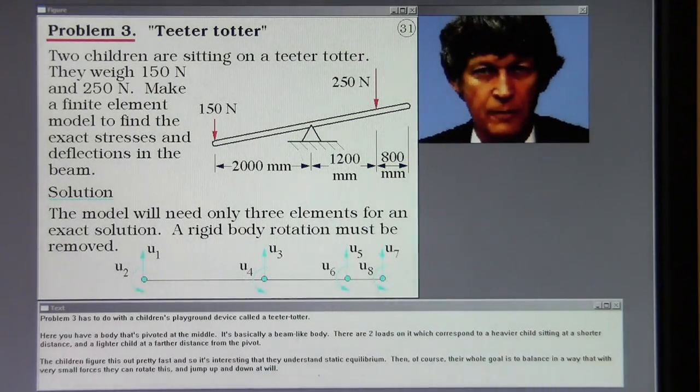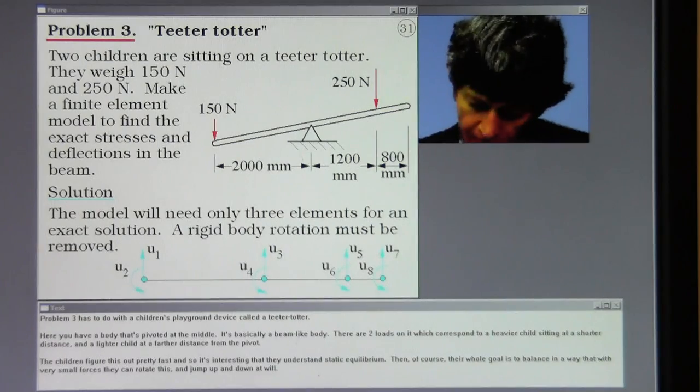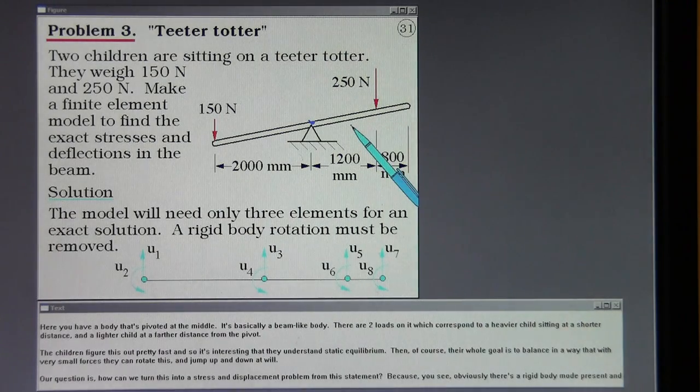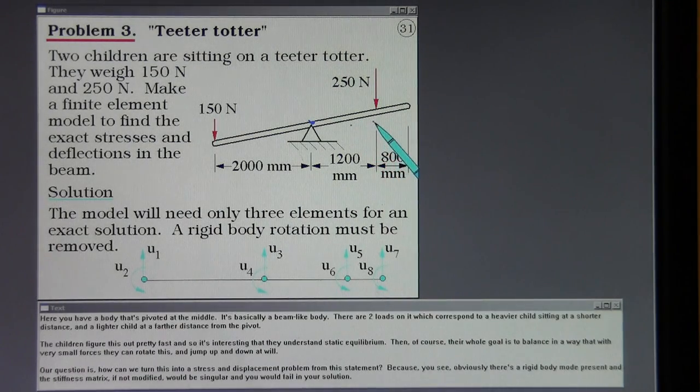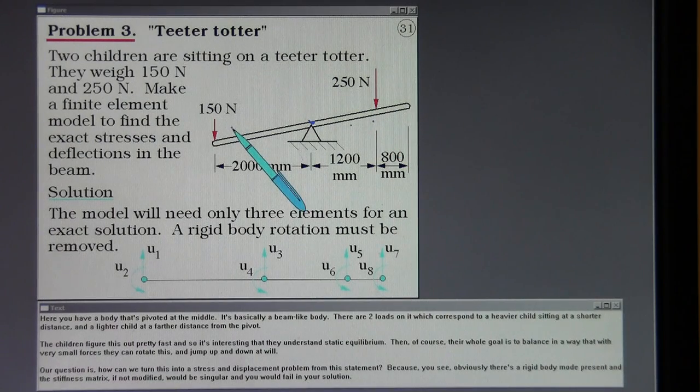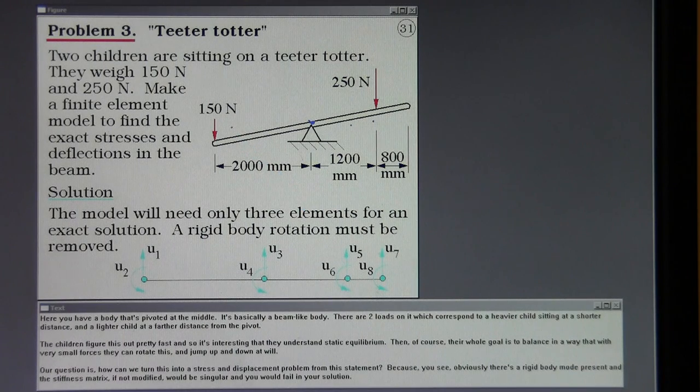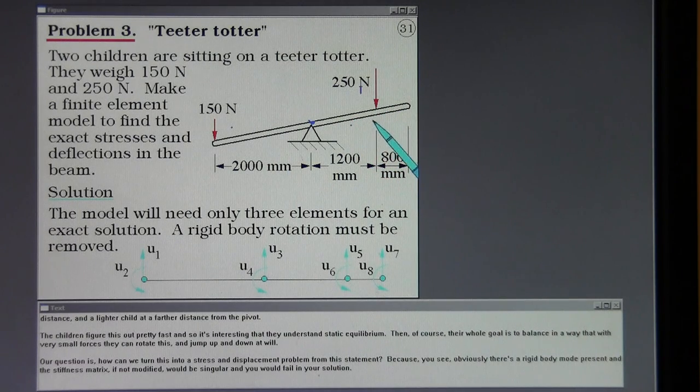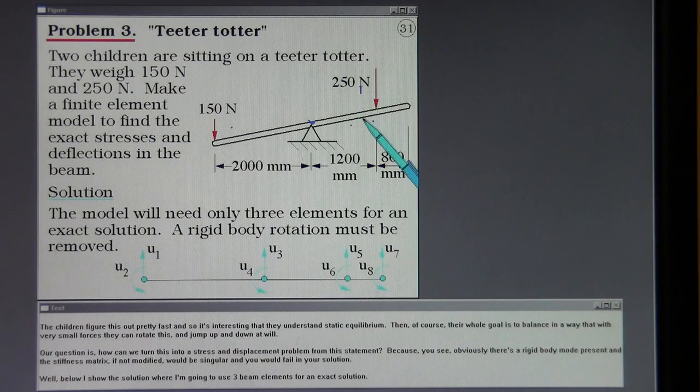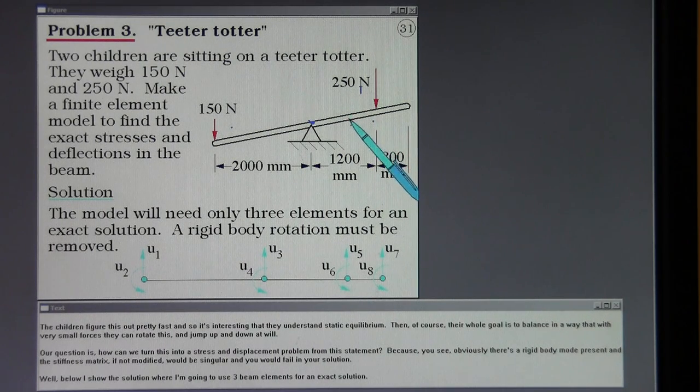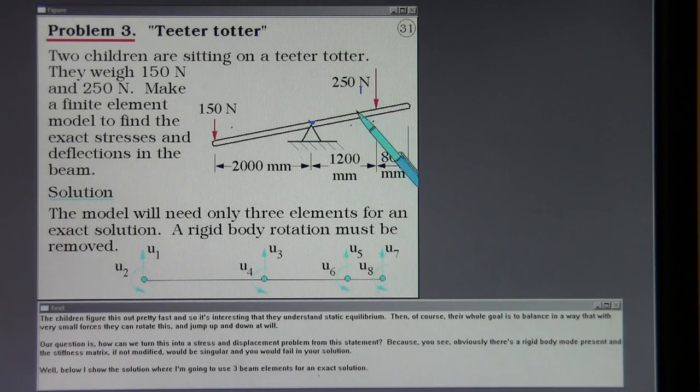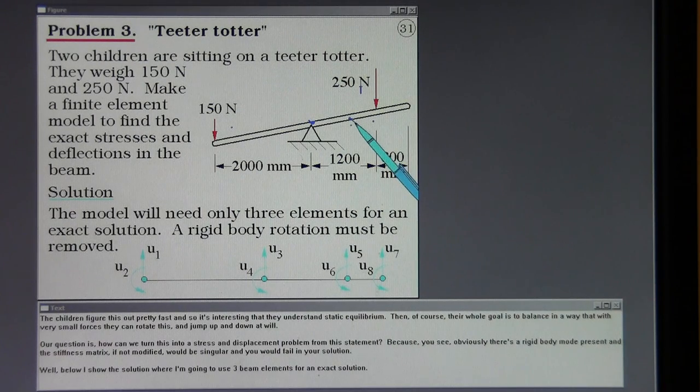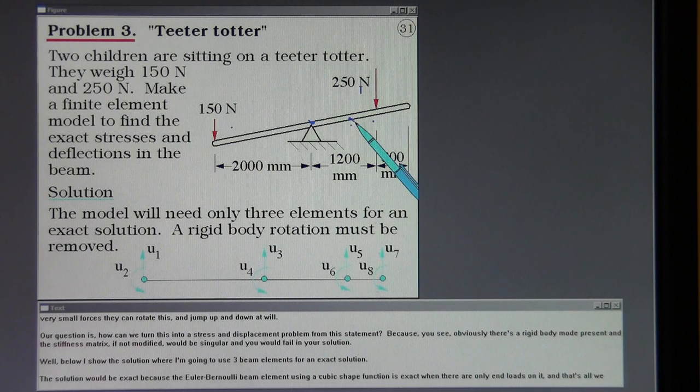Problem three has to do with a children's playground device called a teeter-totter. Here you have a body that's pivoted at the middle. It's basically a beam-like body. There are two loads on it which correspond to a heavier child sitting at a shorter distance and a lighter child at a farther distance from the pivot. Children figure this out pretty fast and so it's interesting that they understand static equilibrium. Then of course their whole goal is to balance in a way that with very small forces they can rotate this and jump up and down at will. Our question is how can we turn this into a stress and displacement problem from this statement? Because you see obviously there's a rigid body mode present and the stiffness matrix if not modified would be singular and you'd fail in your solution.